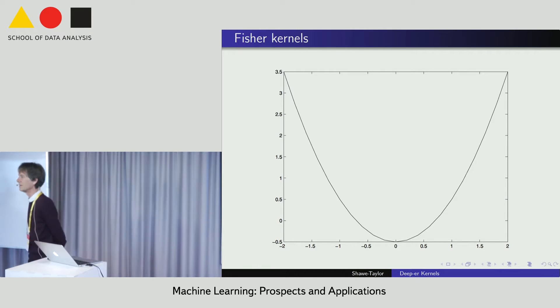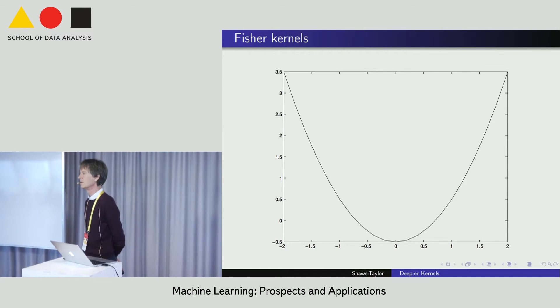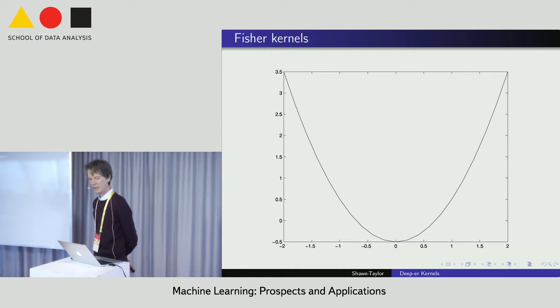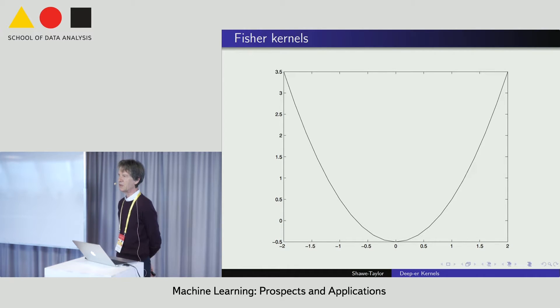An audience member asks: you differentiate with respect to mu and sigma — why not take the natural parameters of the Gaussian? The speaker responds: that's what would happen if we use the Fisher information matrix. Generally, people have used the simpler method of just taking the derivative with respect to the parameters; the advantages of either aren't entirely clear.